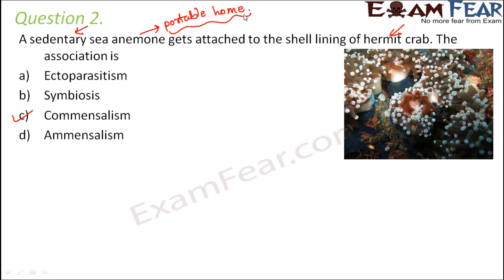From the hermit crab's perspective, it may get some protection due to the stinging cells of the sea animal, but we are not very sure of the benefit. The sea animal is surely getting benefited, while the hermit crab may or may not benefit. Since proto-cooperation is not an option here, commensalism is the best available answer.